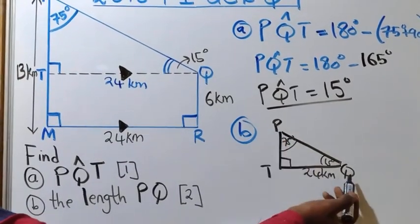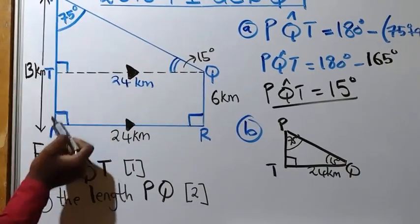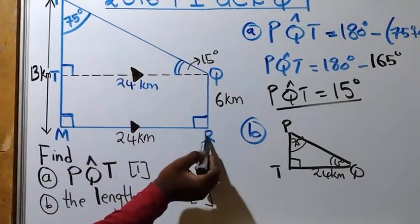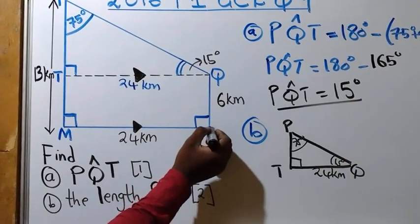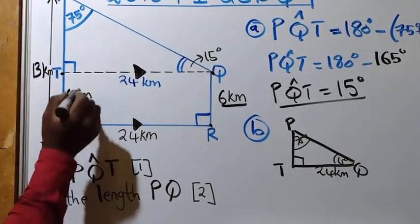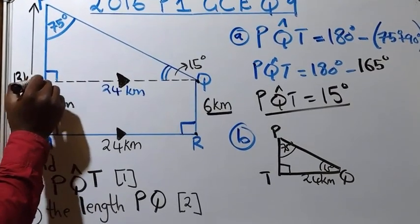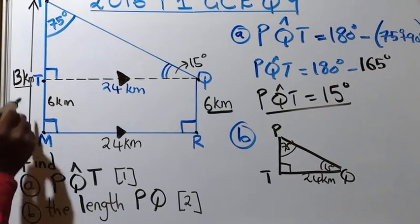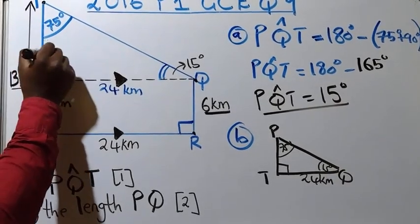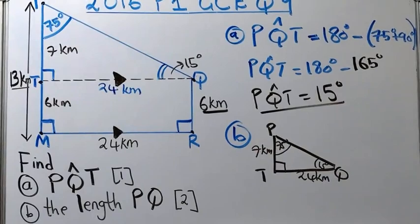Now, what is PT? Come back to the diagram: MP is 13 kilometers, and since MTQR is a rectangle, MT equals QR... actually MT equals 6 kilometers. So the full length from M to P is 13, meaning from T to P is 13 minus 6, which gives us 7 kilometers.